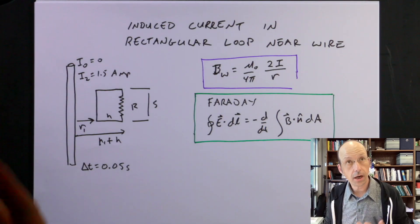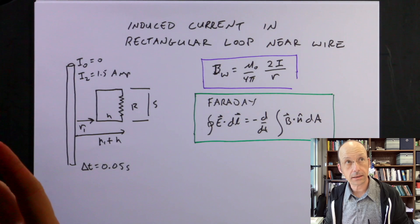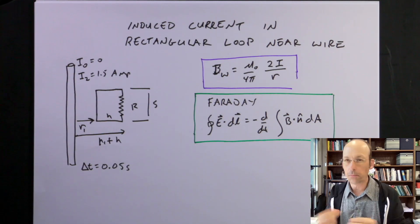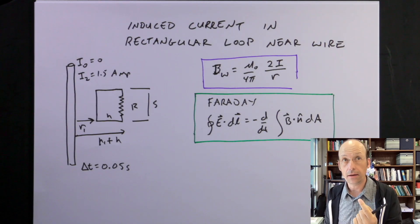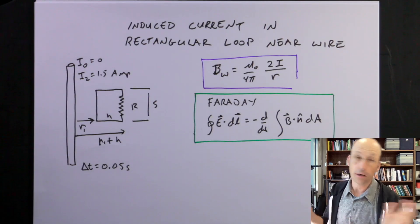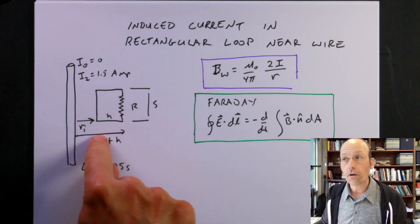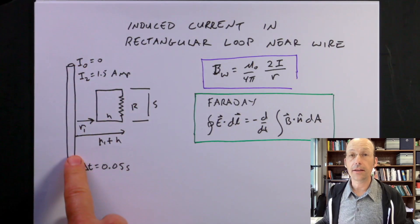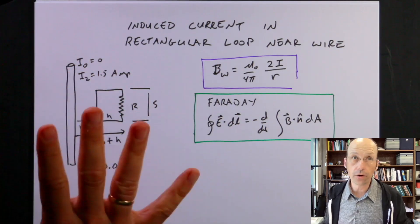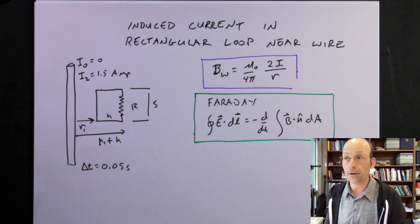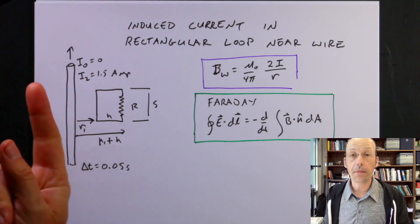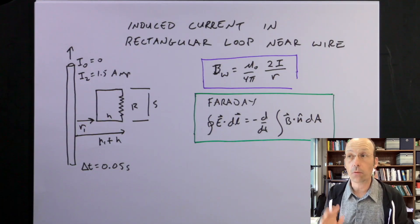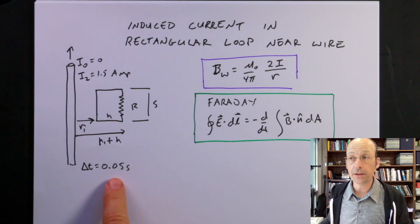I'm going to solve this problem. It's a common problem that pulls together multiple ideas about magnetic fields, induced current, and changing current. Here I have a wire that starts with no current, then a current going upward, going from 0 amps to 1.5 amps in a time of 0.05 seconds.